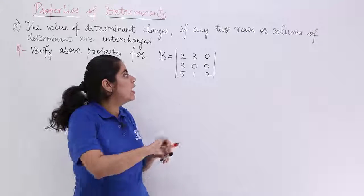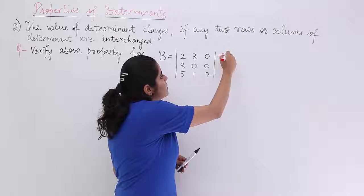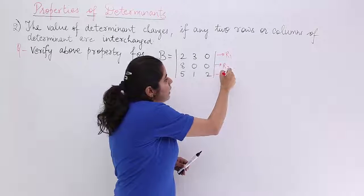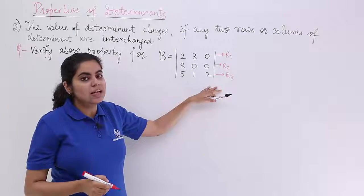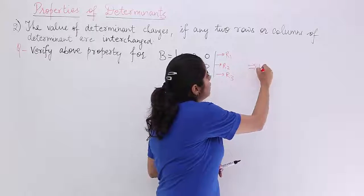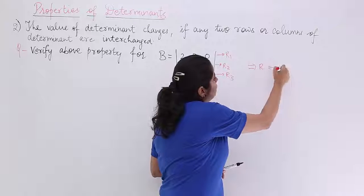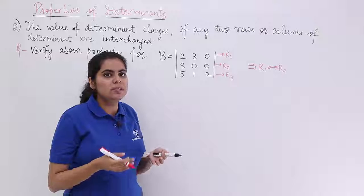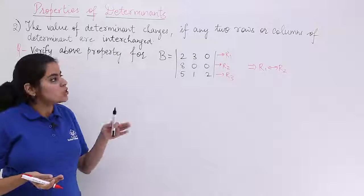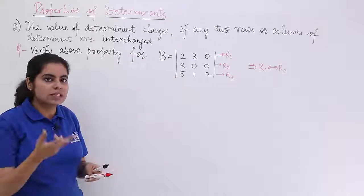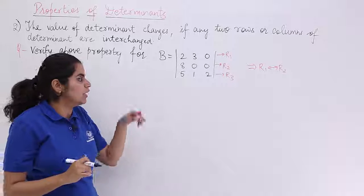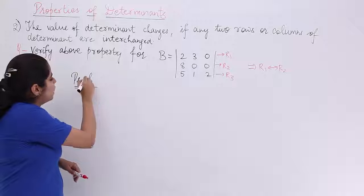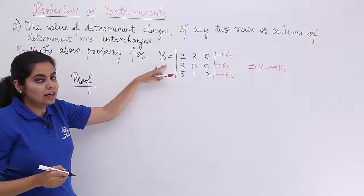Let's get started. We have 3 rows and 3 columns: R1, R2, R3. The interchange I am taking into consideration is R1 with R2. You can interchange any row or any column — this is a practice problem so we are interchanging any two rows. Let's put the heading as 'Proof' and note we have R1 and R2.